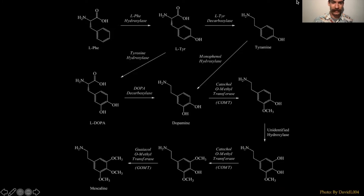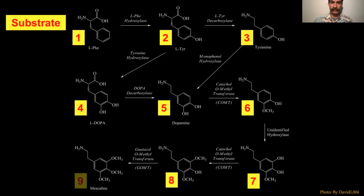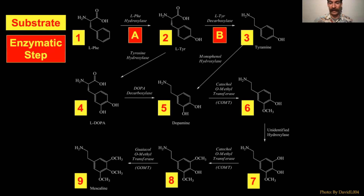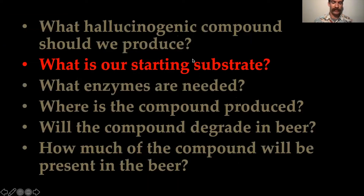Let's look at the biosynthetic pathway to mescaline. The chemical compounds are numbered 1 through 9 and the arrows indicate reactions facilitated by enzymes labeled A through I. Some enzymes have specific names, one step is unidentified. The numbers represent substrates and the letters represent enzymatic steps — this keeps the discussion simple.